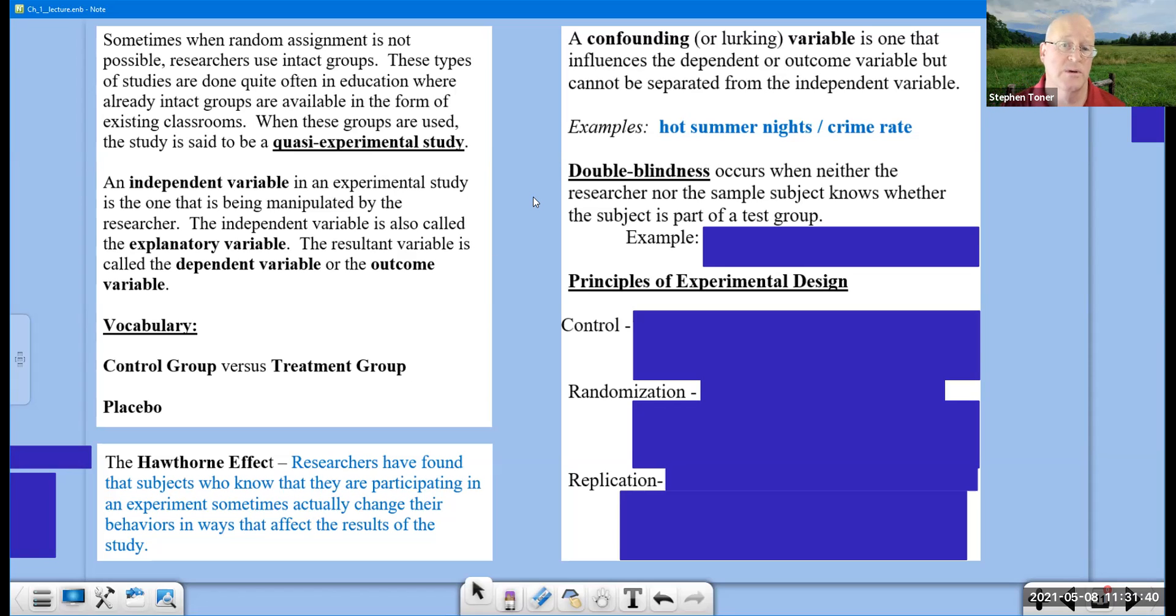Double blindness occurs when neither the researcher nor the sample subject knows whether the subject is part of a test group. In AIDS research, if you are going to be in either the control or treatment group, we don't want either you to know or the doctor to know. Everyone is identified by a barcode, and only the computer knows who is in which group, so that there is not a bias or a different treatment between the two groups.